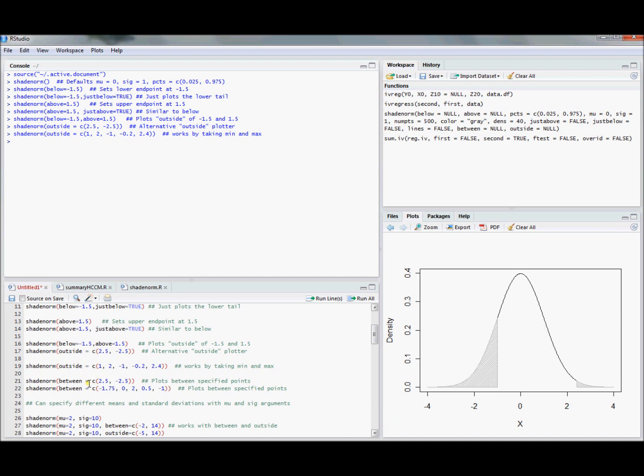Another area that you might be interested in plotting are between areas. You might be interested in plotting between 2.5 and negative 2.5. We can also shade if we don't want to bother figuring out what's the largest and what's the smallest in a particular vector. We can do between in this list. Between works by taking the minimum and the maximum and then just shading the area underneath the normal density between the lower endpoint and the upper endpoint of that vector.